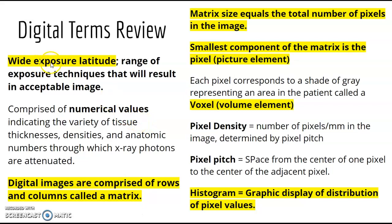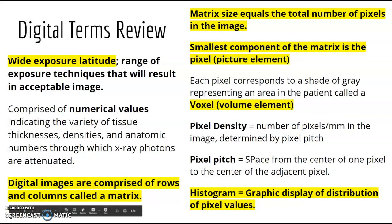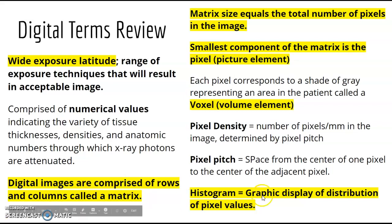Some terms to review: exposure latitude is the range of exposures that will result in an acceptable image. Digital images are comprised of numerical values arranged in rows and columns called a matrix. The matrix size is the total number of pixels in the image. The smallest component is the pixel, or pixel element. There's also voxel, pixel density, pixel pitch, and histogram.